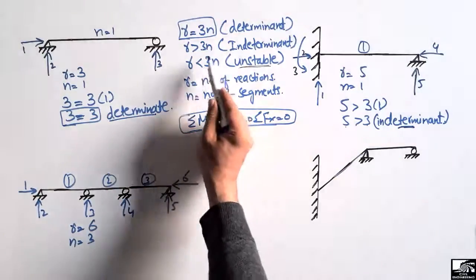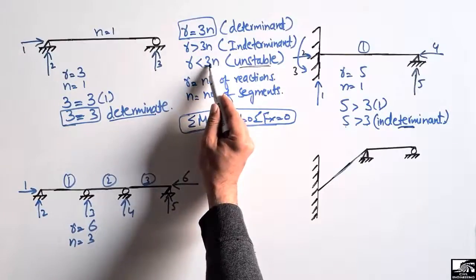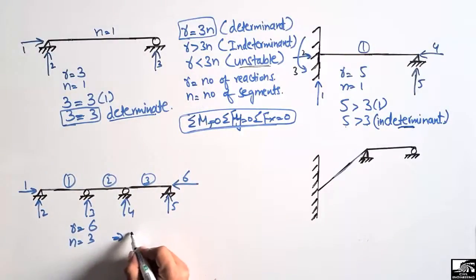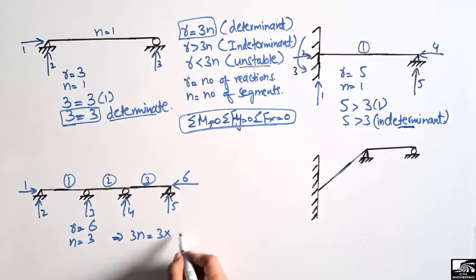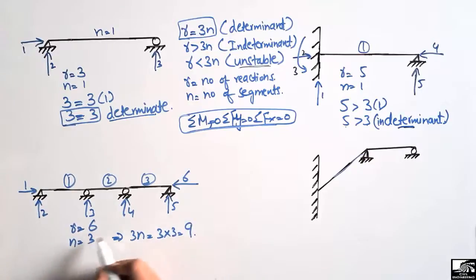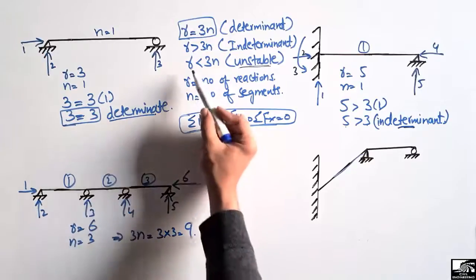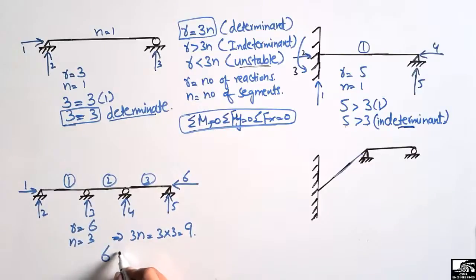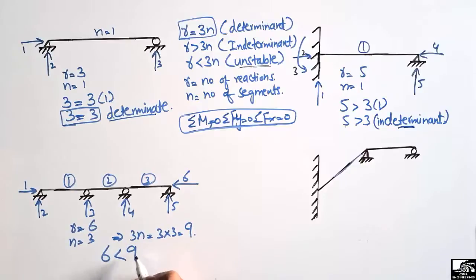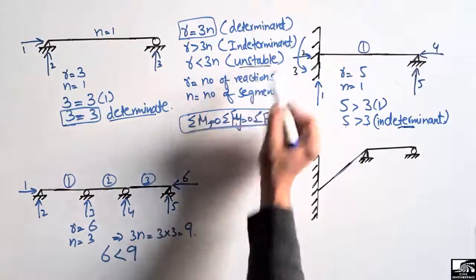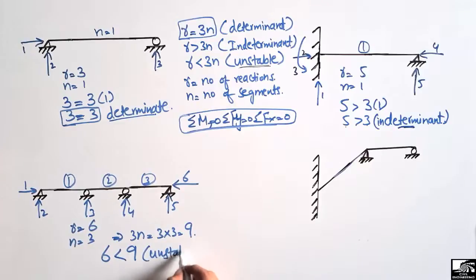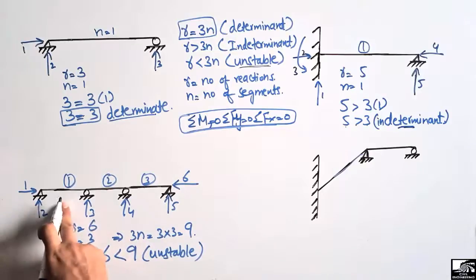Checking: 3n equals 3 times 3, which is 9. Since R equals 6 and 6 is less than 9, this beam is an unstable beam. For such a beam, more supports are needed in order to make it stable.